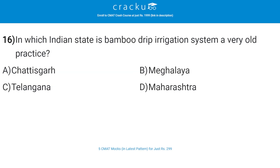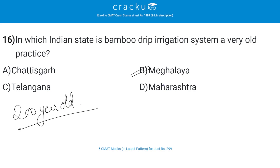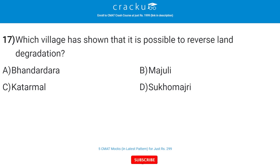In which Indian state is bamboo drip irrigation system a very old practice? The correct answer is B — Meghalaya. The bamboo drip irrigation system is a 200-year-old system in Meghalaya; it is a system of tapping stream and spring water by using bamboo pipes.